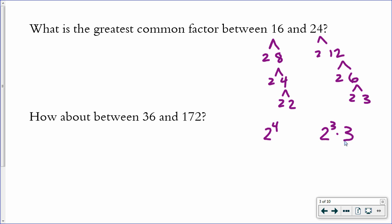Now I'm looking at the two prime factorizations to pull out anything that they have in common. They both have 2 as a common factor. Keep the lower of the two exponents, which is the 3rd power, because you're looking for what they have in common. 16 has four 2s and 24 has only three 2s. So what they have in common is three of those 2s — 2 to the 3rd power. They have no other prime factors in common. 2 to the 3rd power is 2 times 2 times 2, so 8 is the greatest common factor of 16 and 24.